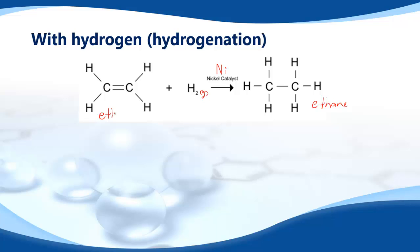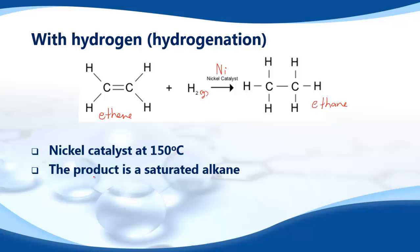So we've gone from ethene, which is unsaturated, to a saturated hydrocarbon, which is ethene. The conditions are nickel catalyst and the temperature is 150 degrees. The product is a saturated alkane, and it's used to make margarine.